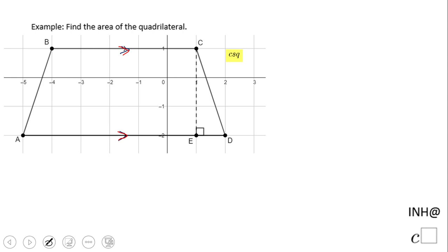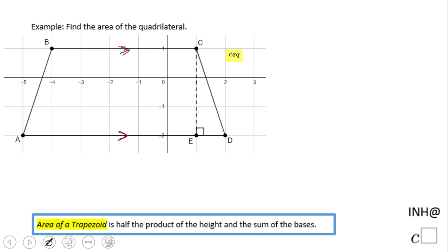So how can we find the area of a trapezoid? We have several choices, especially because this is on a coordinate grid. But let's take a look at what I said here. This is a formula we can use. Area of a trapezoid is half the product of what? Height and the sum of the bases.